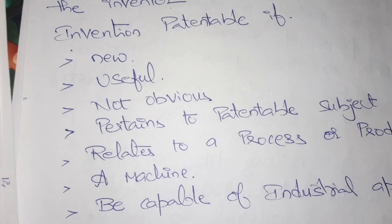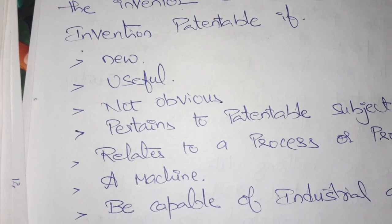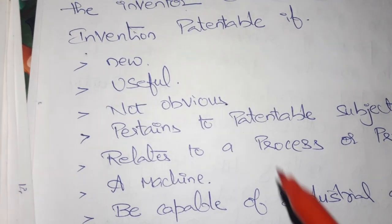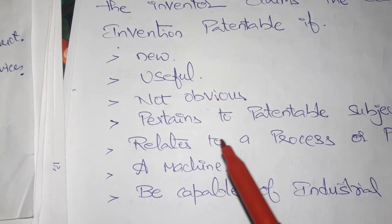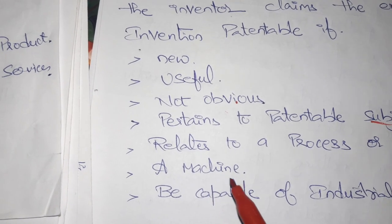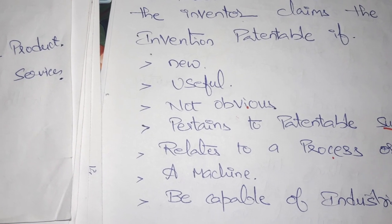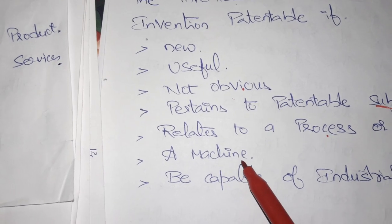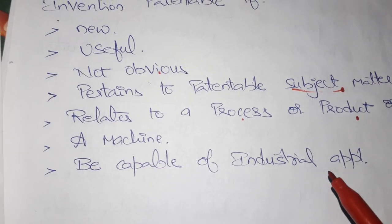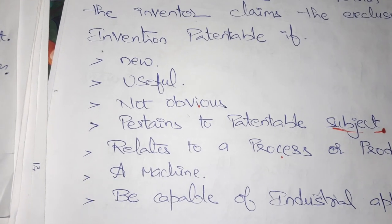An invention is patentable when the product must be new, the product must be useful, the product must be non-obvious, it must contain some subject matter, and it may be a process, product, or both. It may be a machine or be capable of industrial application — then you can take patent rights.